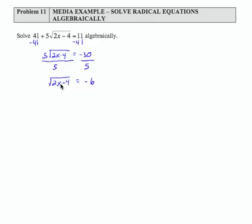Now at this point, the radical is isolated, so I want to remove the radical. And the way I remove a square root is by squaring both sides.